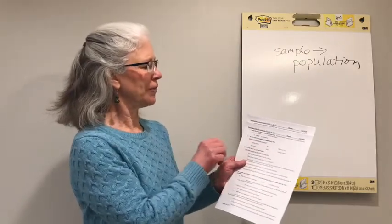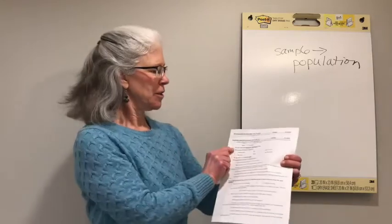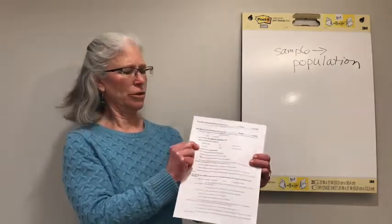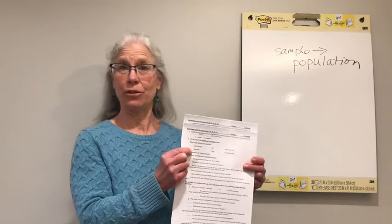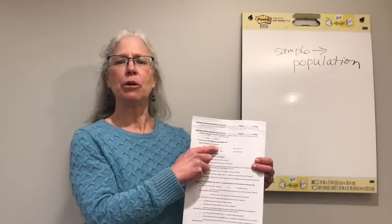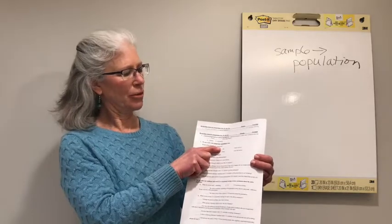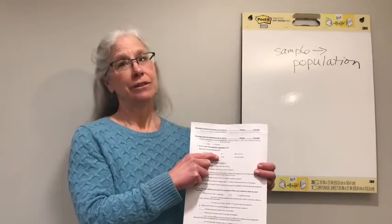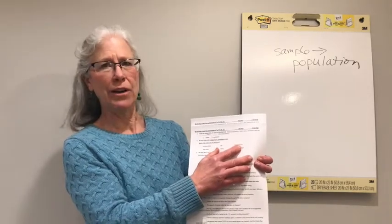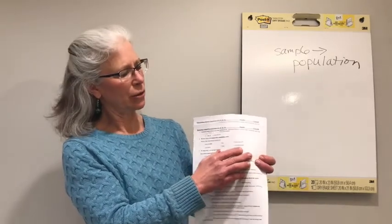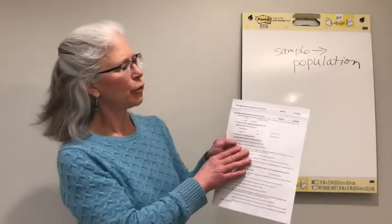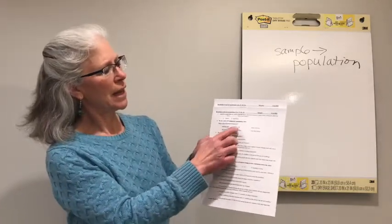Which of the following variables are categorical? I have six variables listed. Smoking status — you either smoke or you don't, so that's categorical. Dog owner — you either are or are not a dog owner, so that is categorical. Age is a number we can add, subtract, divide, and multiply, so that is quantitative. Number of dogs someone owns — quantitative. Cancer survivor — you either are or are not, so that's categorical. Do you or do you not wear a bike helmet — categorical, yes or no. So four of these are categorical and two of them, age and number of dogs, are quantitative.